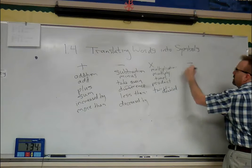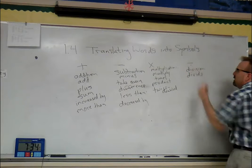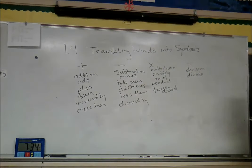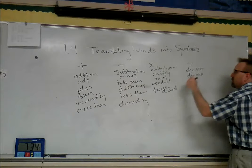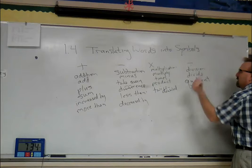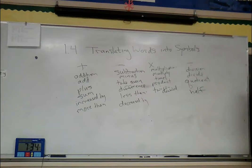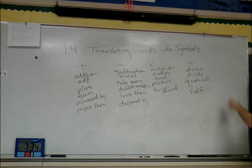All right, so we have division. 'Divide' - what's the answer we get? 'Quotient'. If you see something like 'half', what do we do? Divide by two. If it says 'a fourth' of something, we divide by four.